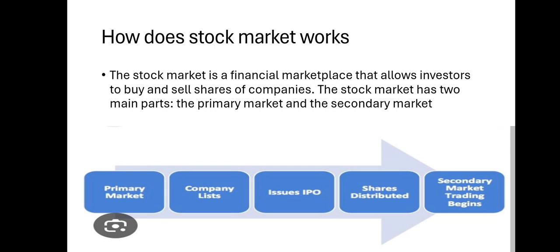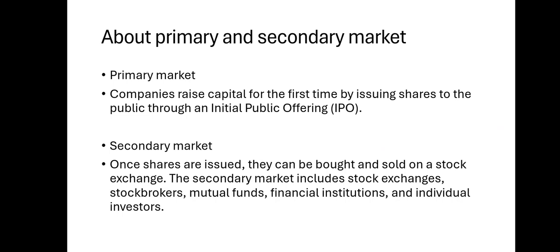How the stock market works: a stock market is a financial marketplace that allows investors to buy and sell shares of companies. The stock market has two main parts — the primary market and the secondary market. In the primary market, companies raise capital for the first time by issuing shares to the public through an Initial Public Offering, or IPO. In the secondary market, once shares are issued, they can be bought and sold on a stock exchange, involving stockbrokers, mutual funds, financial institutions, and individual investors.